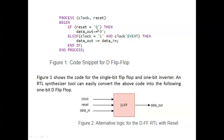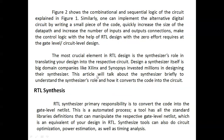If reset is 0, there is no data output. If clock is 1 and also on the clock event, data out will get the value of data in — the same input appears at the output. Then end if and end process. This completes the basic D flip-flop program. The RTL synthesizer is primarily responsible for converting this code into a gate-level netlist.